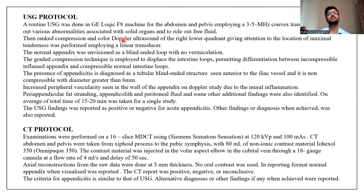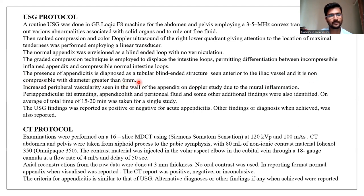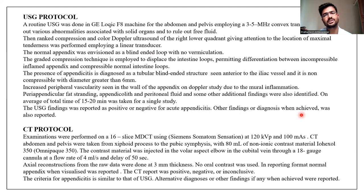For the USG protocol, a GE Logic effect machine was used for abdomen and pelvis examinations with a 3 to 5 megahertz convex transducer. The normal appendix was visualized as a blind-ended loop with no vermiculation. The graded compression technique was also used for better visualization. The appendix showed a tubular blind-ended structure, non-compressible with diameter greater than 6 mm. Increased perifollicular vascularity in the appendix wall was sometimes seen on Doppler due to mural inflammation. USG findings were reported as positive or negative for acute appendicitis, and any other findings were also reported.